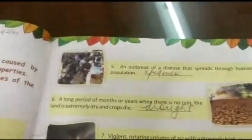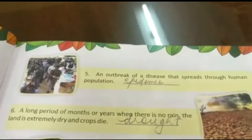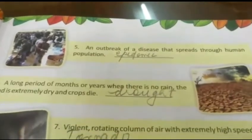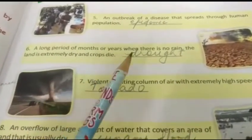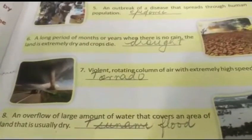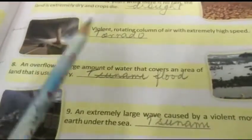Epidemic is an outbreak of a disease caused through human population contact, in a smaller area. When it spreads worldwide, we call it pandemic — as during the corona period. A long period without rain causing everything to dry up is called drought (D-R-O-U-G-H-T). A rotating column of air is called a tornado.